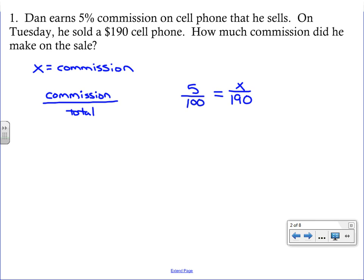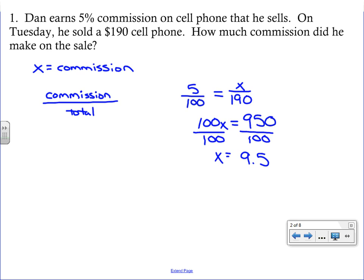Once you have your proportion, we cross multiply: 100x equals 5 times 190. Then you divide to solve that simple one-step equation. You can plug this into your calculator — press pause if you need to.